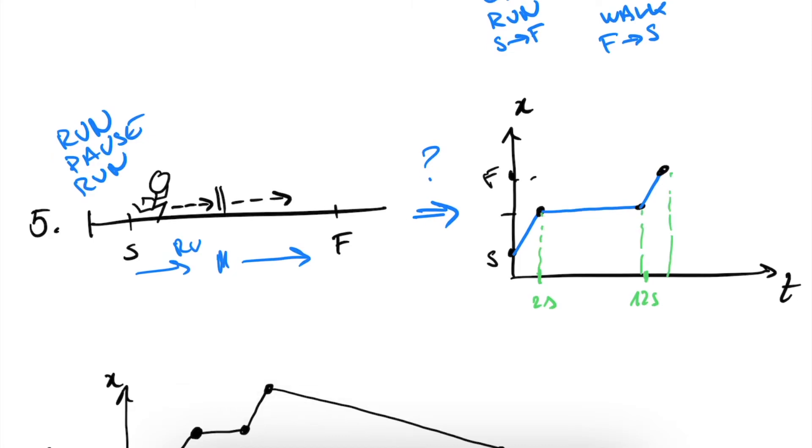What we see is, again, that we have a running phase here where our slope is very steep. Then we have a rest phase here where our slope is flat, so X doesn't change because we're not moving. And then we have a running phase all the way from our midpoint to our final point. And this is basically how this graph with pause looks like.